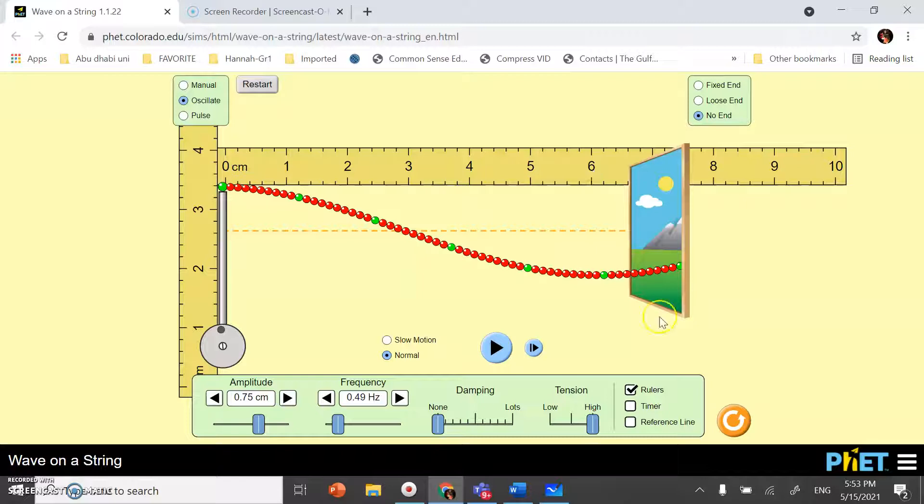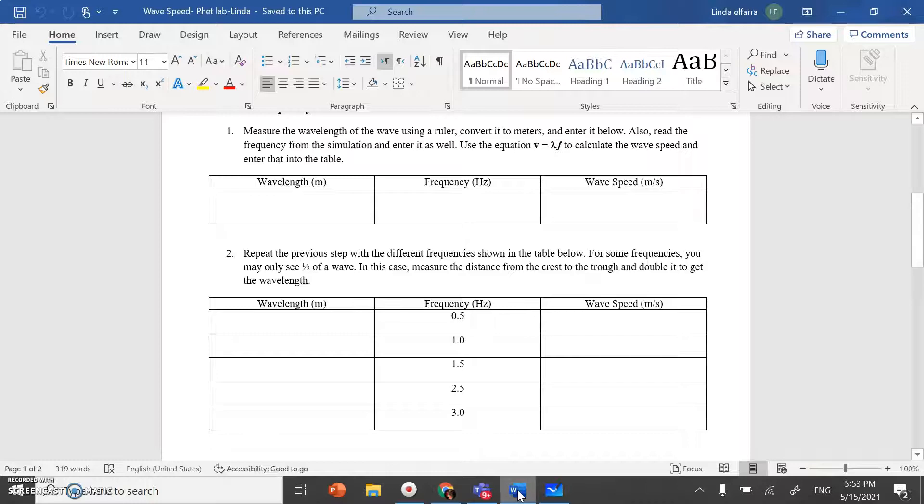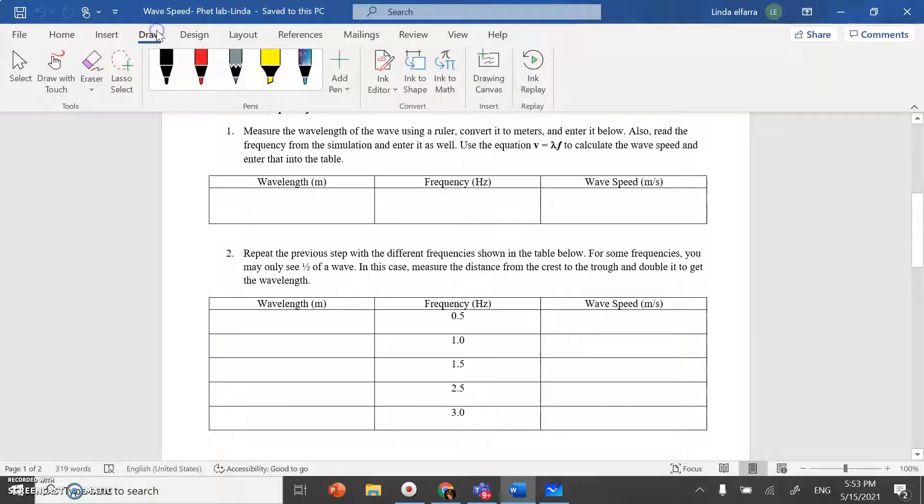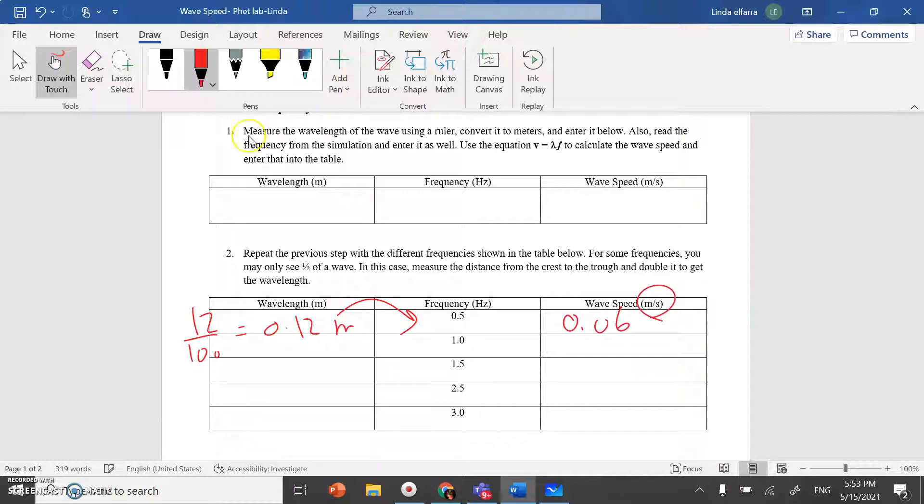12 centimeter. This will be lambda converted to meter. So, it should give you 12 converted to meter divided by 100. So, it's 0.12 meter. Multiply it by this value. So, 0.12 times 0.5. It should give you almost 0.06 meter per second. Then, you increase the frequency. Increase it to 1. I'm going to increase it to 1.5. I will let you do the rest of the table.